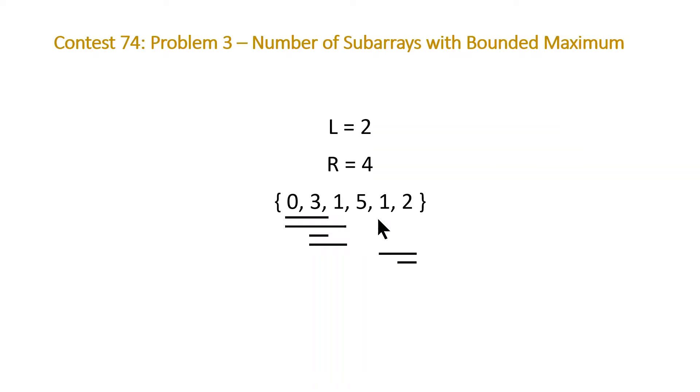When we move to our final two, the 1 by itself isn't going to meet the requirements because it's less than our lower bound. But once we have two, that meets the lower bound and is less than the upper bound, so we'll have two subarrays in our last two elements. That in total will give us a result of six possible subarrays.